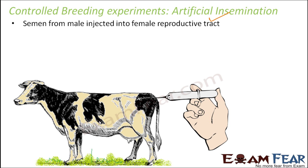Now, how does it help? There might be certain limitations as far as natural mating is concerned. Sometimes you actually need to wait for a longer period of time for the animals to mate naturally. Sometimes you end up wasting a lot of time waiting for the bull to show interest in the cows. A lot of things depend on the psychology of the animals, so you cannot completely control it.